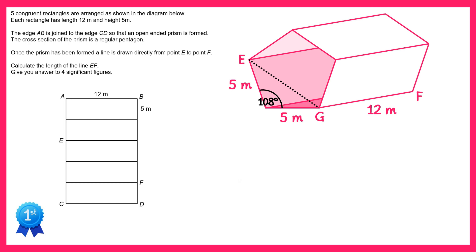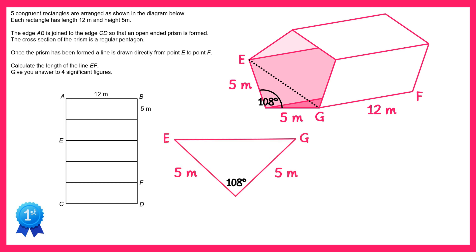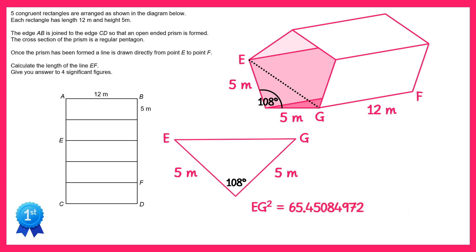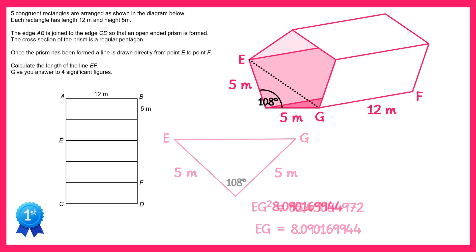Now if we look at this triangle we've created, it looks something like this. We can use the cosine rule to find the length from E to G. So EG squared equals 5 squared plus 5 squared minus 2 lots of 5 times 5 times cos of 108. If you type the right hand side into your calculator you'll get this, and then square rooting both sides gives you EG. So we can add EG to our diagram.